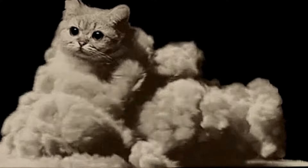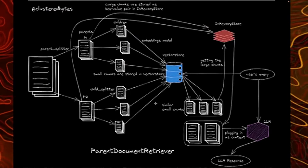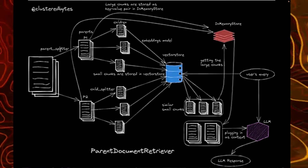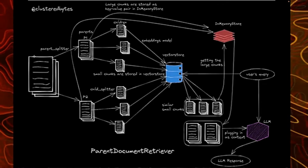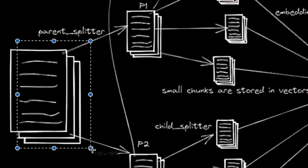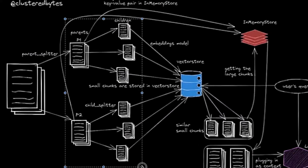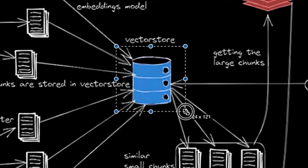Before starting the video, let me give you an overview of how a retrieval augmented generation system works. RAG is a term used for retrieving information from your own documents — it's a fancy term for an old concept in information retrieval. You need a knowledge base or documents from which you want to retrieve specific information. Typically you chunk these documents into sub-documents, compute embeddings for each chunk — numerical values that help determine the closest matches — and store these embeddings along with the original chunks in a vector store.